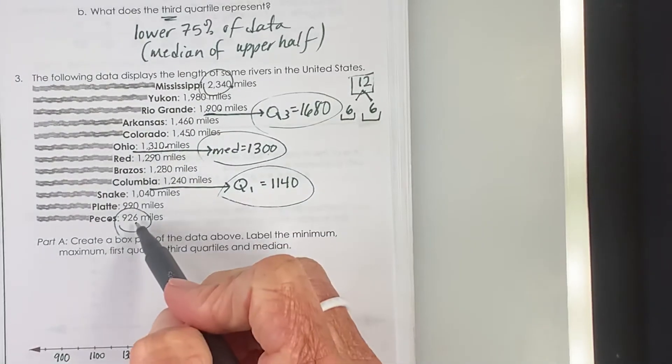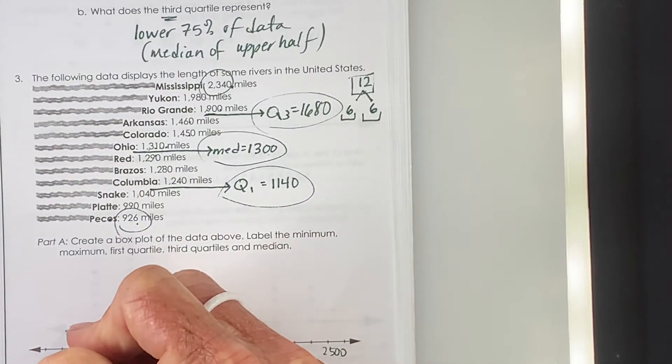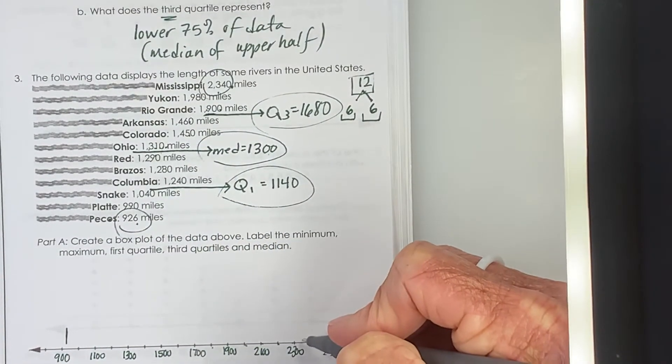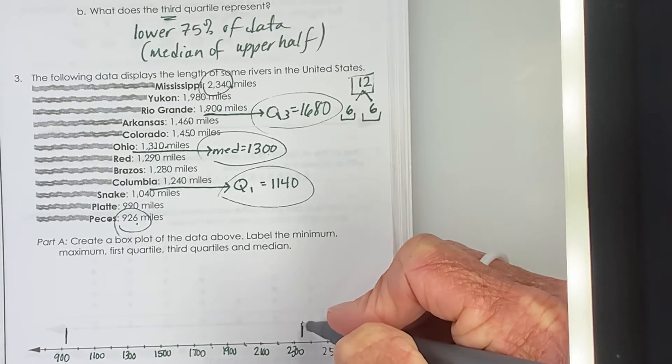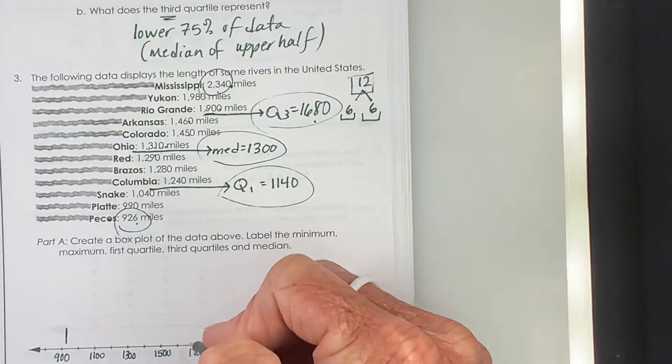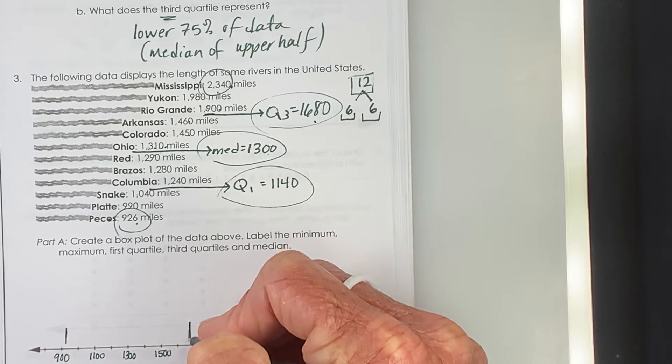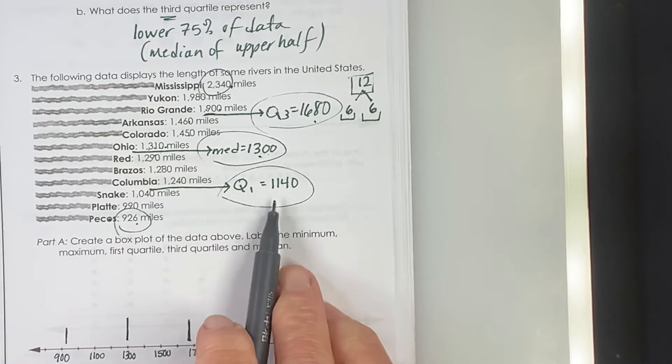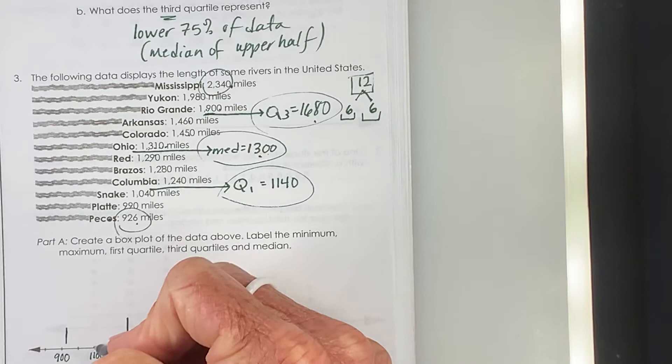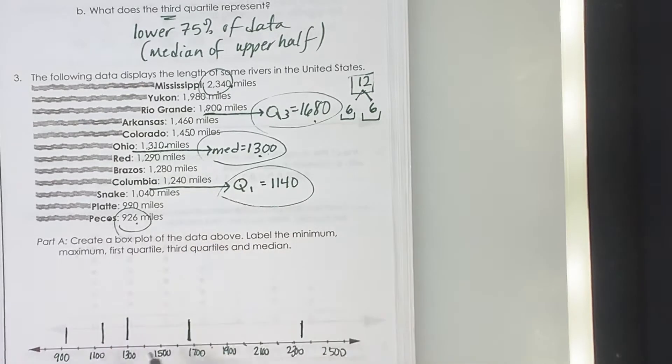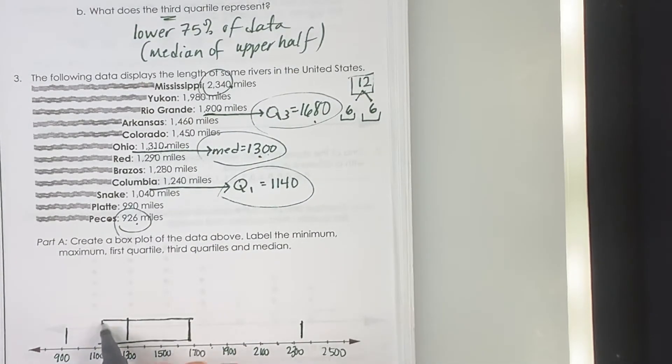So our lowest value is 926. We'll just approximate that. That's our minimum. Our largest value is 2,340, almost halfway in between these two, but closer to 2,300. Quartile 3 is at 1,680, so that's going to be closer to 1,700 than 1,600. Our median's exactly at 1,300, and our lower quartile's at 1,140. So again, closer to 1,100 than 1,200. So these are the corners, the edges of our boxes, and here are our box plots.